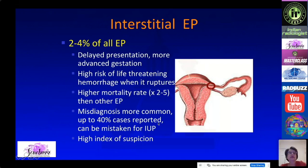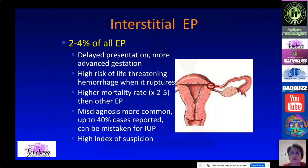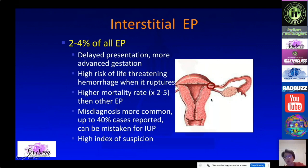Interstitial ectopic pregnancies represent about 2-4% of all ectopic pregnancies, but they are dangerous because they tend to have a delayed presentation with more advanced gestation. Because there are very large vessels in this area supplied by the uterine artery, there is a high risk of life-threatening hemorrhage when the pregnancy ruptures. These patients may become hypovolemic and hypotensive very quickly.